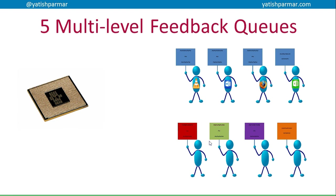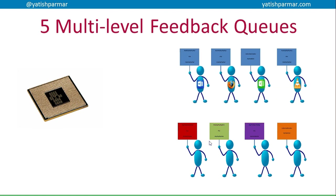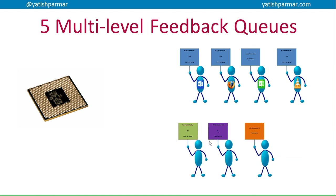A multi-level feedback queue is a bit more complicated than the previous four. In this one you have multiple queues waiting to use the CPU. As jobs are given a long amount of processor time and they're not finishing - for example a rendering task - they get blocked and bumped down the queue while other tasks are moved up. This prevents long tasks from monopolizing CPU time. As tasks are completed, the ready queue moves along and new tasks are added to the end.